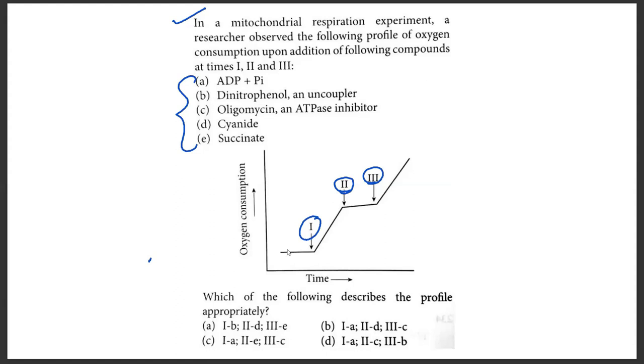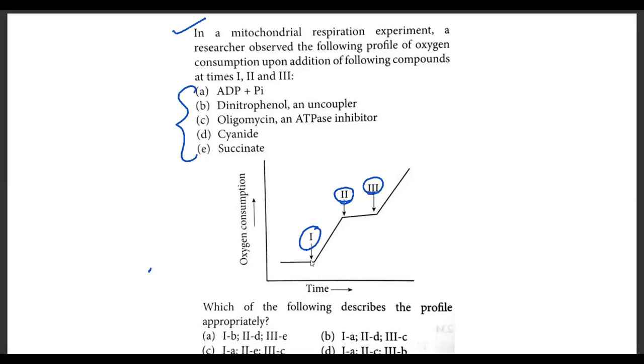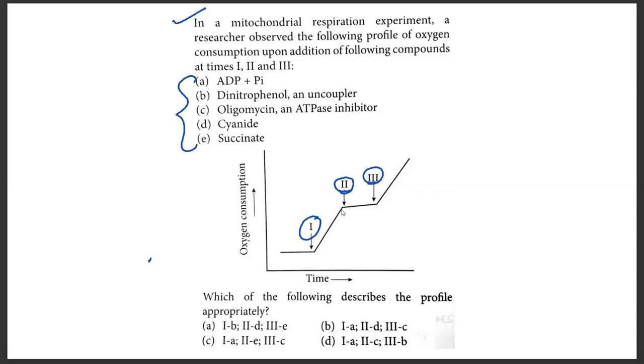How do we identify the best profile? Quite simple approach. First, you have to see what is happening in the graph. As you can see, initially, the oxygen consumption is stagnant. When you add compound 1, there is an increase in oxygen consumption. This increase is a very sharp increase.